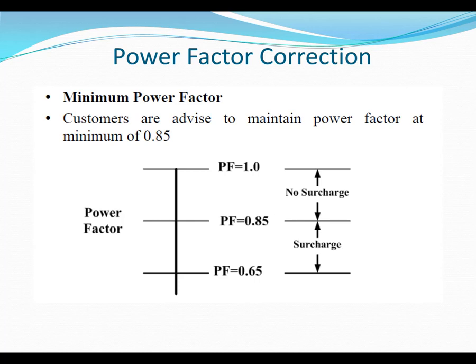TNB will impose a surcharge on a customer whose average power factor is lower than 0.85. If our power factor is lower than 0.85, we will be charged by TNB — we have to pay a penalty. This applies to medium and low voltage consumers.